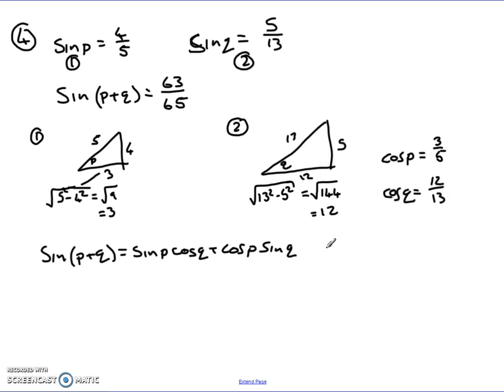So I now have the four values I need, I now substitute them in. So sine P is 4 fifths, so I've got 4 fifths times my cos Q, which is 12 over 13. Plus cos P, which is 3 fifths, times my sine Q, which is 5 over 13.